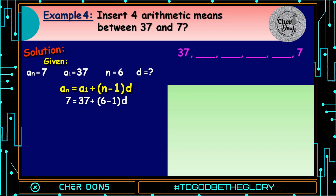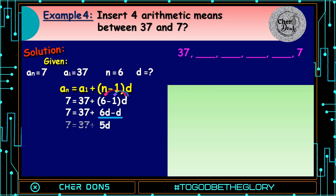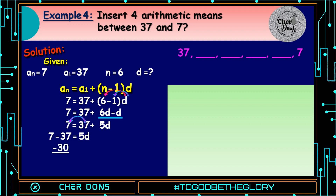By the distributive property of multiplication, we multiply d by quantity 6 minus 1, that is 6d minus d. So 7 is equal to 37 plus 6d minus d. Combining like terms, 6d minus d is 5d. So 7 is equal to 37 plus 5d. Transpose 37 to the other side; it becomes negative. So 7 minus 37 is negative 30. Negative 30 is equal to 5d. Divide both sides by 5: negative 30 divided by 5 equals negative 6. Therefore d is equal to negative 6.